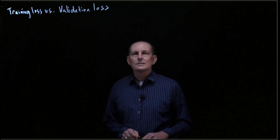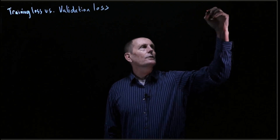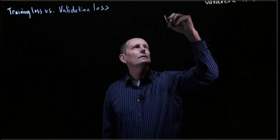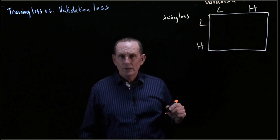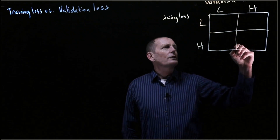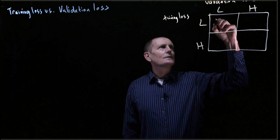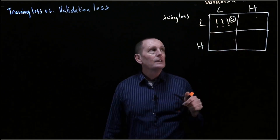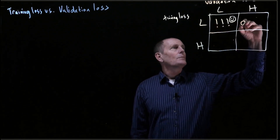Let's discuss the training loss versus the validation loss. We talked earlier about a chart with quadrants. Low training loss and low validation loss is what we like. If we have high validation loss but low training loss, that means we're overfitting.